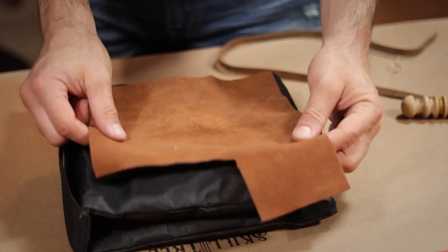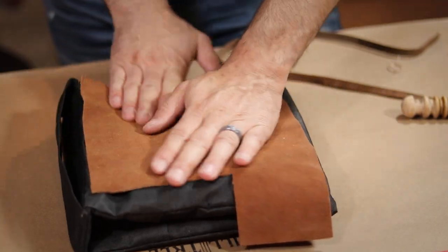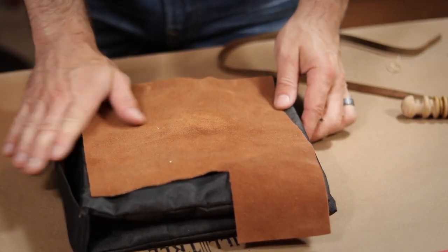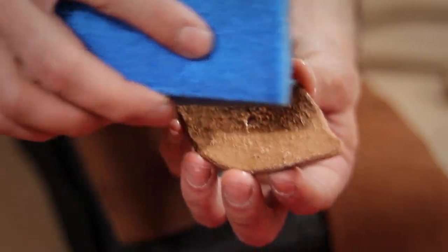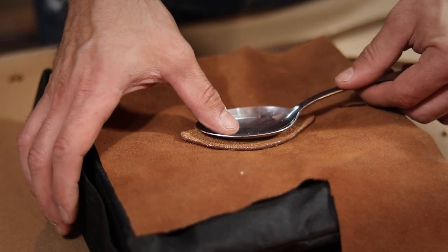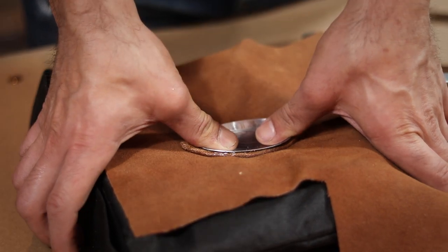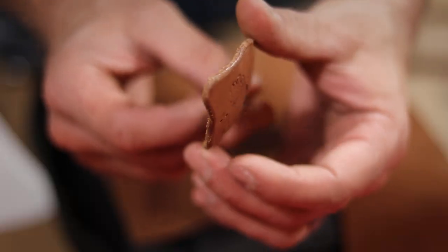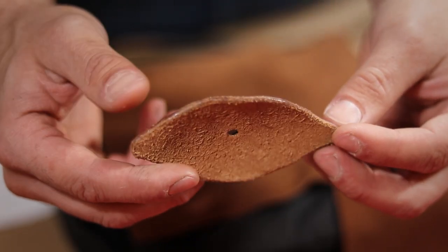I also decided to add some thin suede to the top, just to stop the texture of my bag from marking up the eyepatch. Next, I thoroughly wet the leather to make it more pliable. Then positioned it onto my sandbag, and used a spoon to press it into shape. This is going to wetform it into a domed shape so that the patch doesn't irritate your eye.